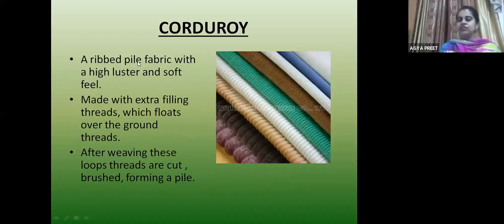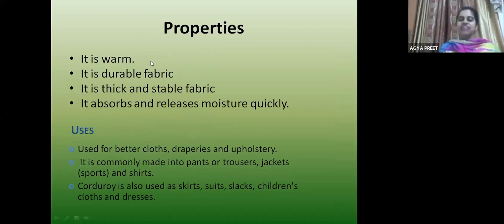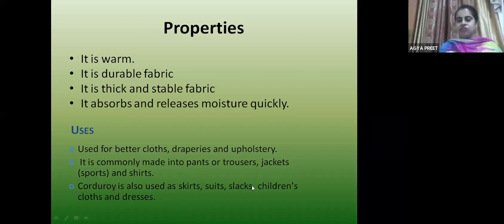Corduroy is a pile fabric with high luster and feel. After weaving, the loops are cut. It is warm — pile fabrics trap air which prevents body heat from escaping, providing coziness. It is thick and stable, absorbs and releases moisture quickly. Used mostly for pants, trousers, jackets and shirts.